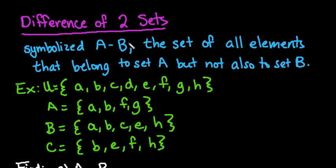This is symbolized by A minus B, where this represents set A and this represents set B. It can be used for any name of any set, but basically the difference of two sets is the set of all elements that belong to the first set, so set A,